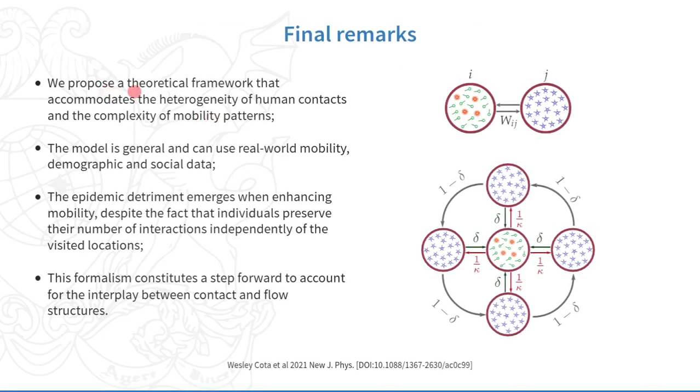In conclusion, we propose a theoretical framework that accommodates the heterogeneity of human contacts and the complexity of mobility patterns. The model is general and can be used with any real-world mobility, demographic, and social data. In the case investigated here, the epidemic detriment emerges when enhancing mobility, despite the fact that individuals preserve the number of interactions independently of the visited locations.